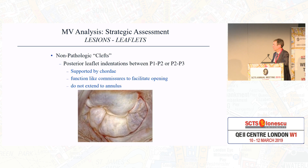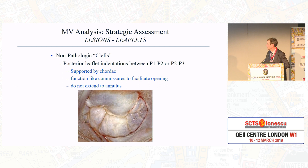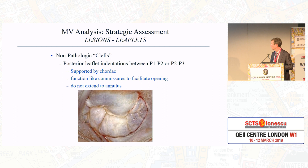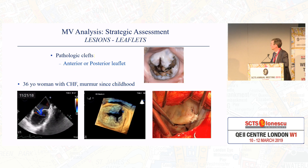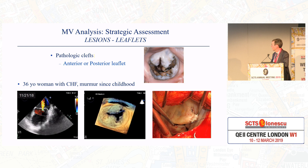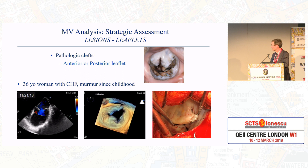There are non-pathologic clefts that are normal to be in the leaflet. They are generally supported by cords and function like commissures to facilitate opening of the valve for a better orifice area. They do not extend all the way to the annulus, which makes them different from the pathologic form of cleft — one in the anterior leaflet and one in the posterior leaflet — creating a more complex jet than the central jet seen with annular dilatation.